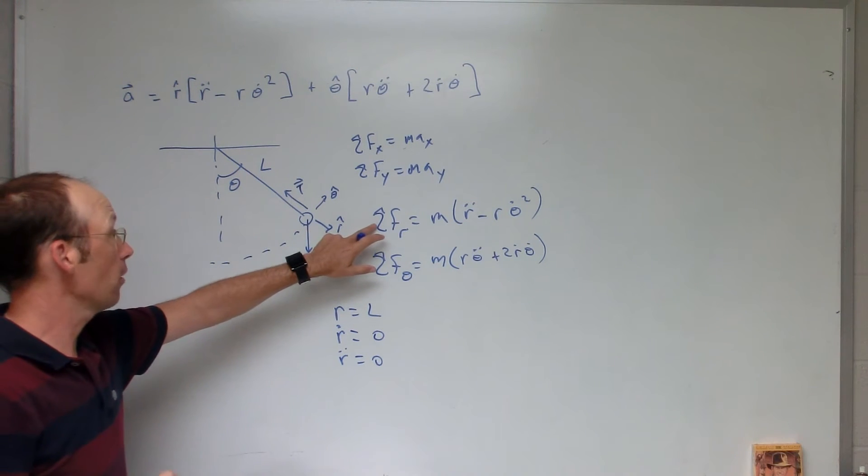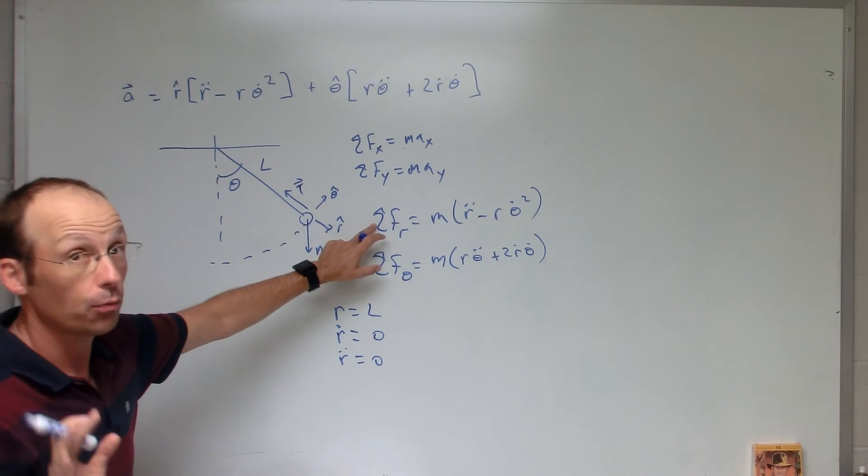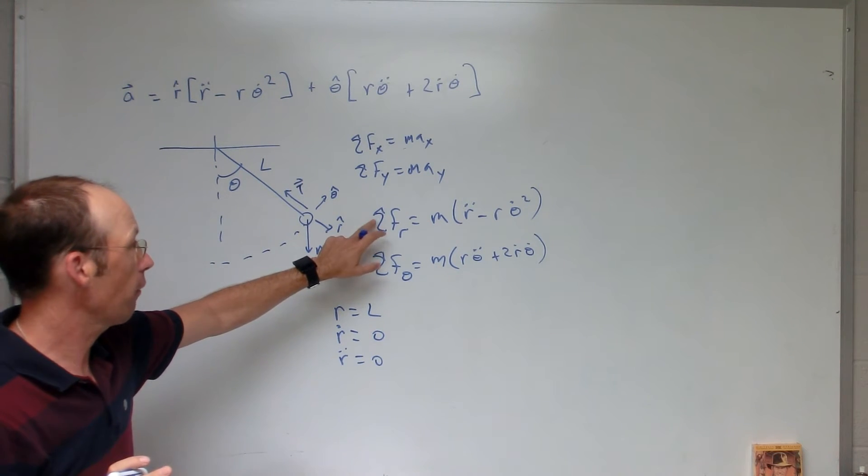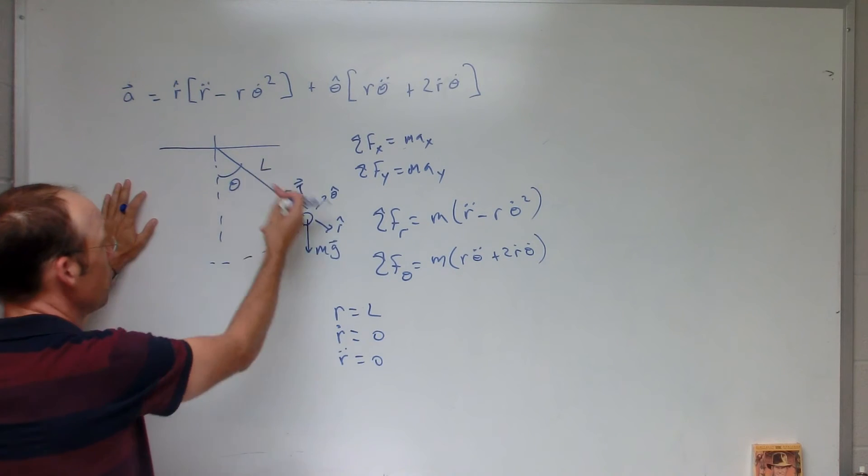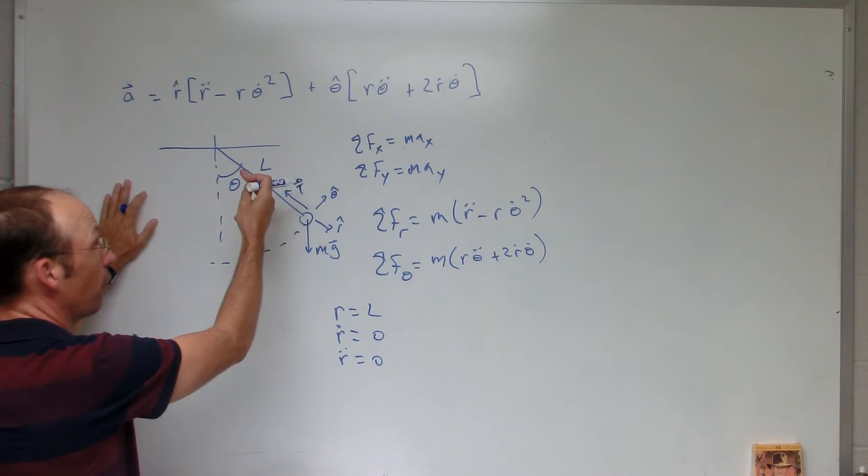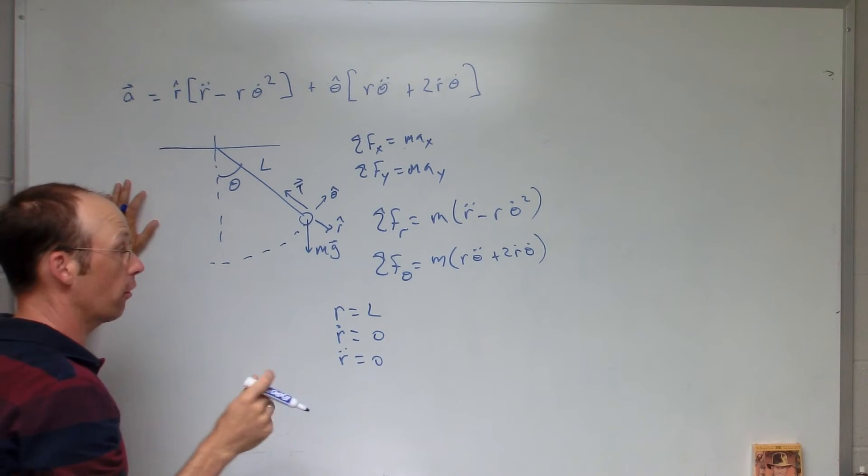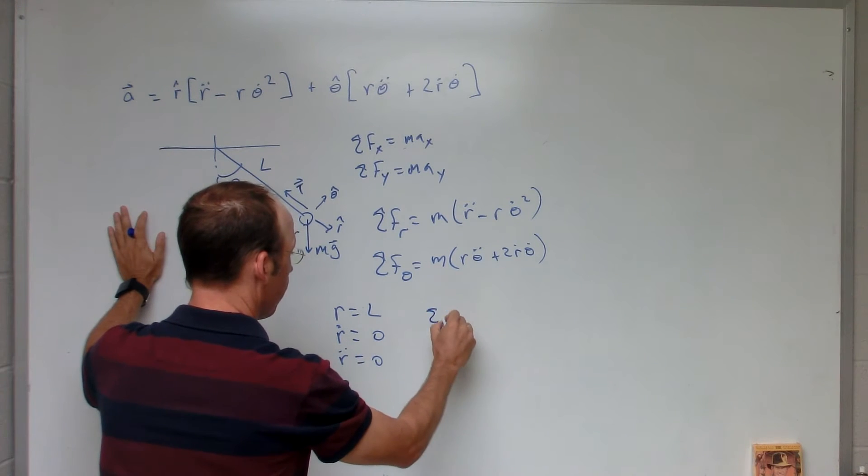Let's write down the sum of the forces in the r direction, even though we're not going to need it. But I'm going to write it down anyway. So, in the r direction, I have two forces. I have tension pulling that way, which is the negative r direction, but it's all in the r direction.